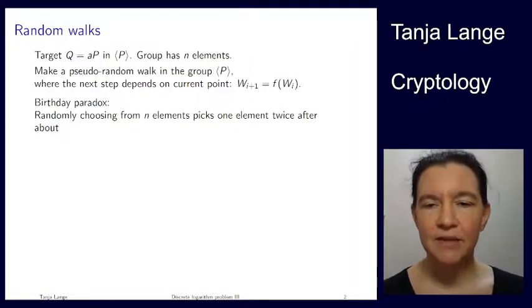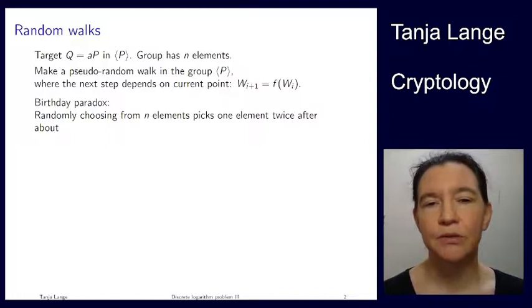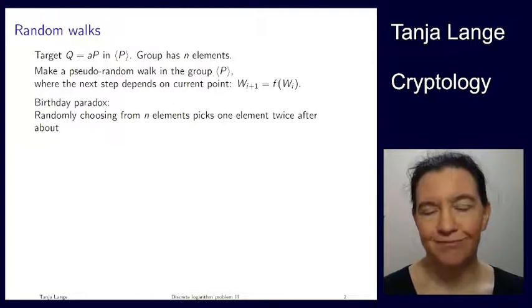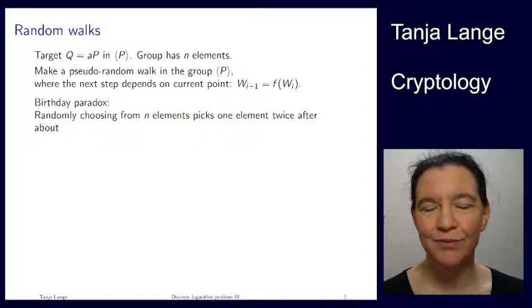We have now seen the baby step giant step attack as something which takes square root of the group order to break the discrete log problem, but I was also pointing out that it also takes square root of the group order in space, and that's a bit of a problem for attacks. Of course, we do want problems for attacks, our purpose is to design secure systems, but if there are ways to avoid storage, then we should be aware of those.